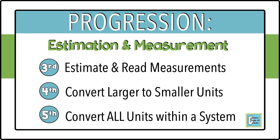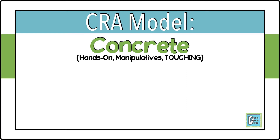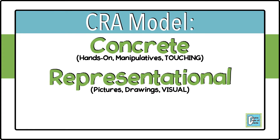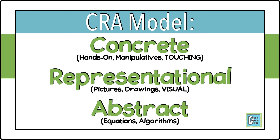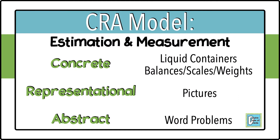In third grade we focus primarily on estimation and measuring exact measurements. As we go through, I'm going to take you through the CRA model — concrete, representational, and abstract. We start with concrete, which is hands-on manipulatives students can touch. Then representational, where they draw pictures of what they learned. And lastly, abstract, where we deal with equations and algorithms. For estimation and measurement, concrete means liquid containers and balance scales with weights, representational means pictures, and abstract means word problems.